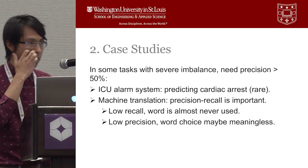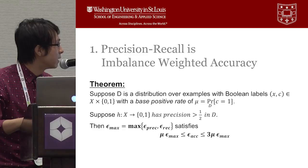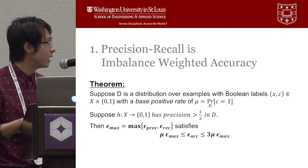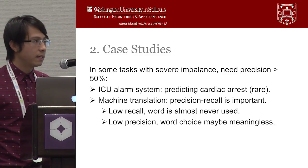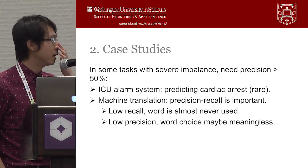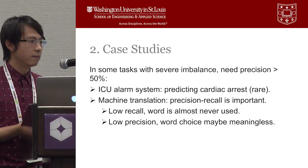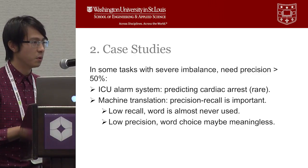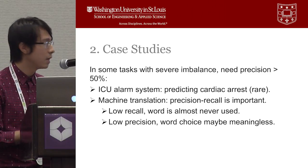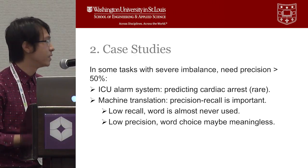Let's look at some case studies when we really need high precision. Remember from our theorem we need the assumption that precision is greater than 0.5. The first example is the ICU alarm system for predicting cardiac arrest. Because cardiac arrest is a very rare event and it's very costly, we really want that when the ICU alarm system is triggered, the patient actually needs to be transferred to the ICU. So indeed we want high precision.